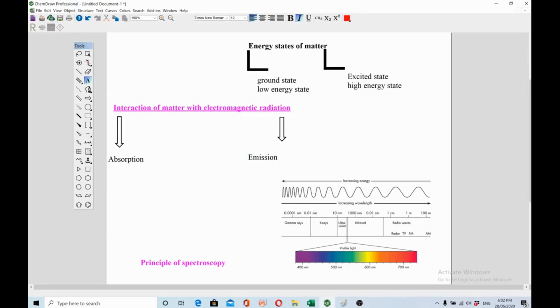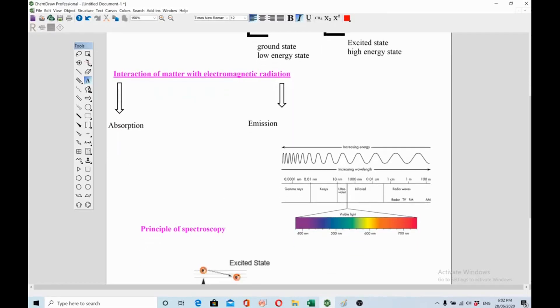You need to know the numbers exactly, like from which number visible region is started and at which number it is stored. So visible like VIBGYOR, you must have heard about this: violet, indigo, blue, green, yellow, orange, red, and then you have NMR and UV visible also.